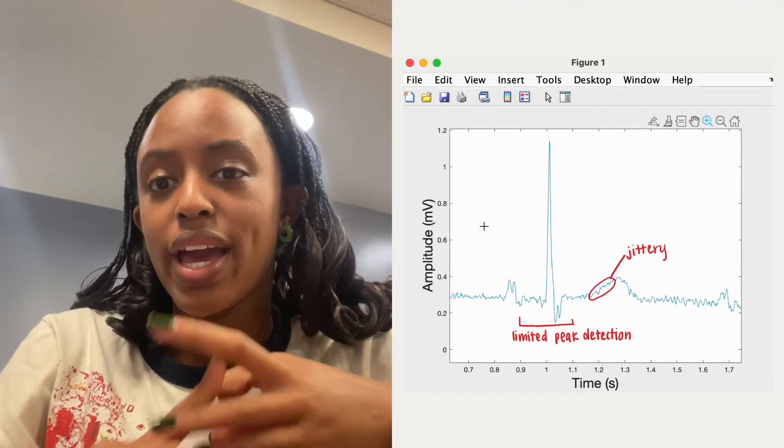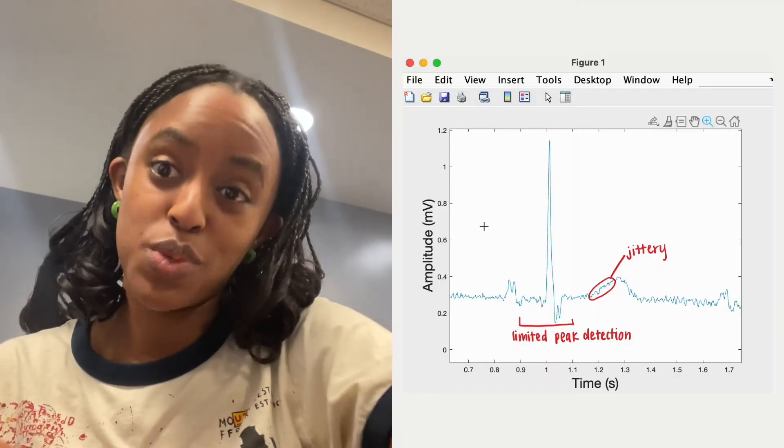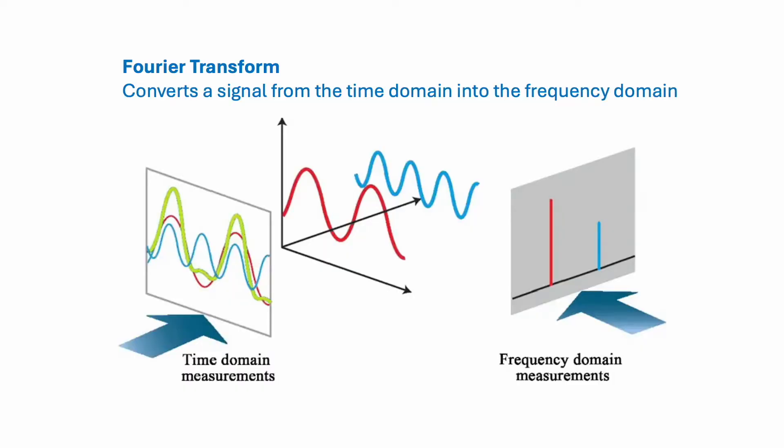As such, we need a way to selectively filter out the components of the signal we want from those we don't. To understand how we can do this, we first need to understand the Fourier transform, which takes a signal in the time domain and converts it to a signal in the frequency domain.